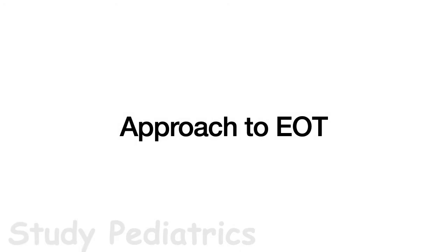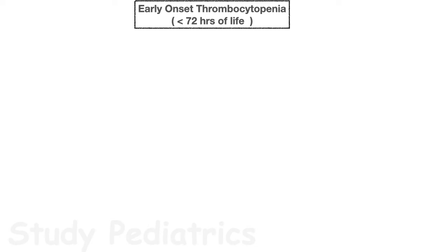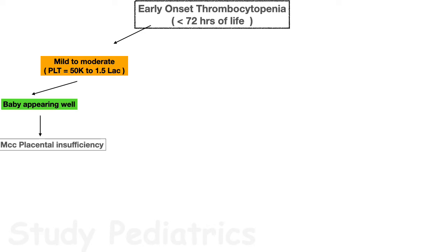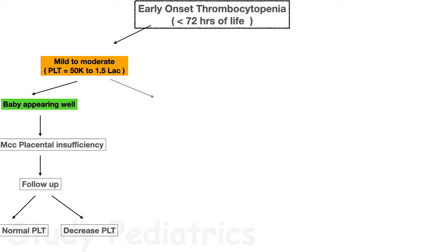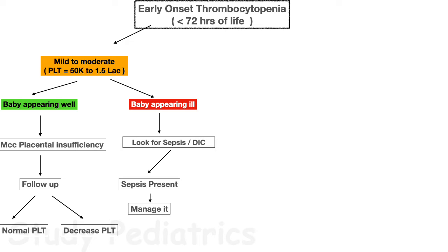In the approach to early onset thrombocytopenia, if the platelet count is between 50,000 and 1.5 lakhs — mild to moderate — we look at the baby. If the baby appears well, the most likely cause is placental insufficiency; reassure and arrange follow-up in 10 days. If still low, further investigation is needed. If the baby appears ill, look for sepsis or DIC and manage accordingly.